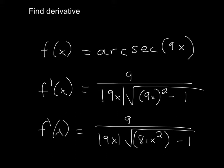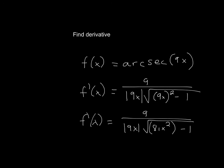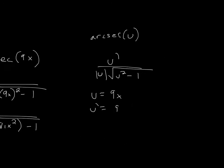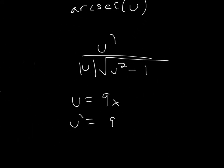In this problem, they just want you to find the derivative of arc secant of 9x. So what you do is use the formula. The formula for the derivative of arc secant of u is: u prime, which is the derivative of whatever is inside, over the absolute value of u times the square root of u squared minus 1.